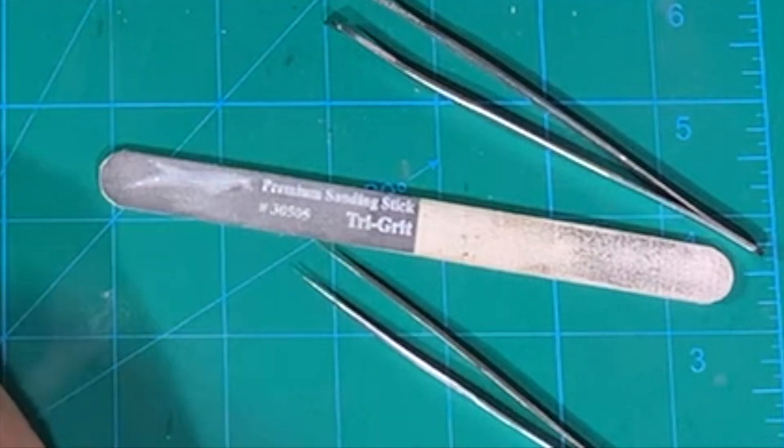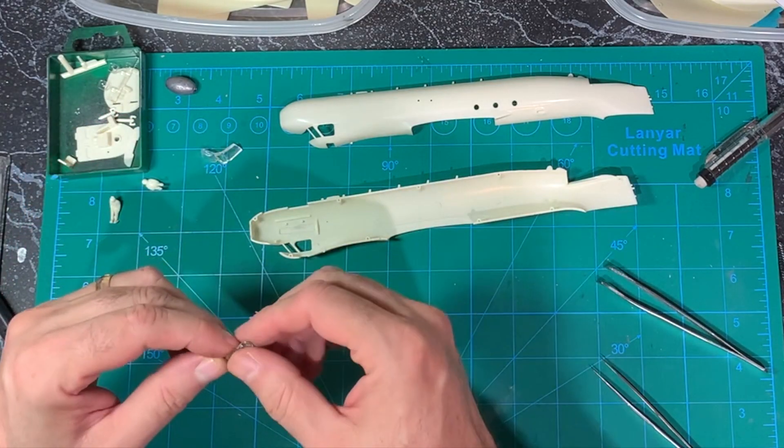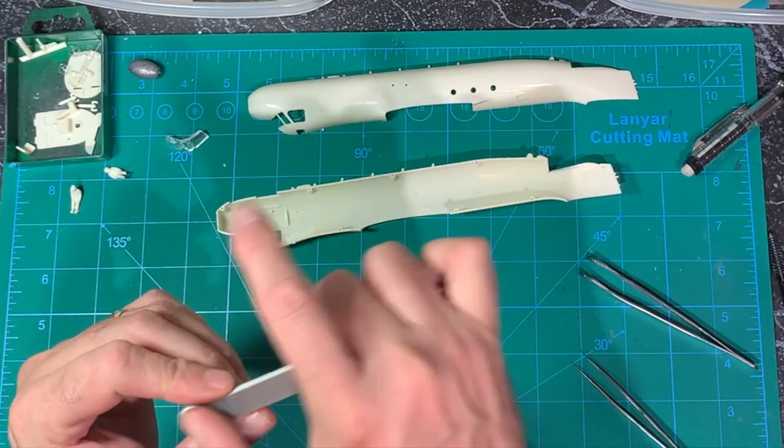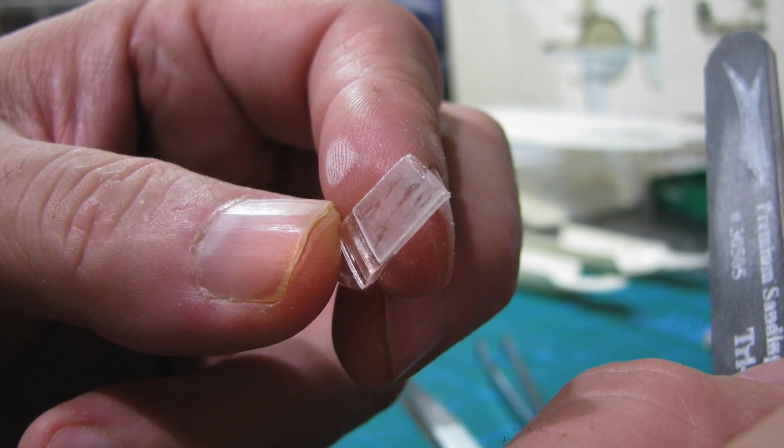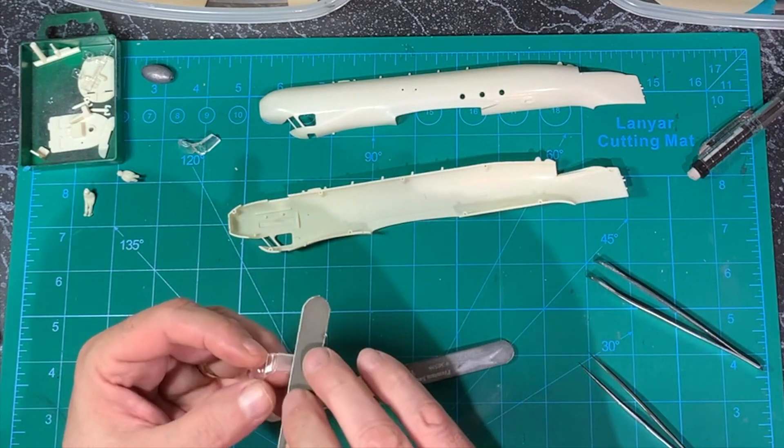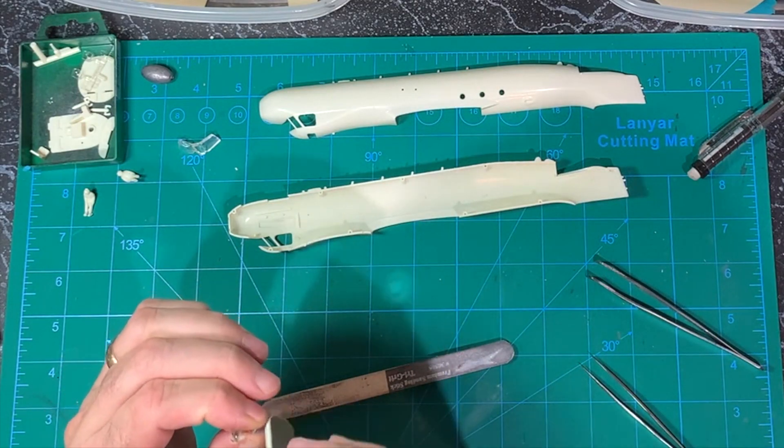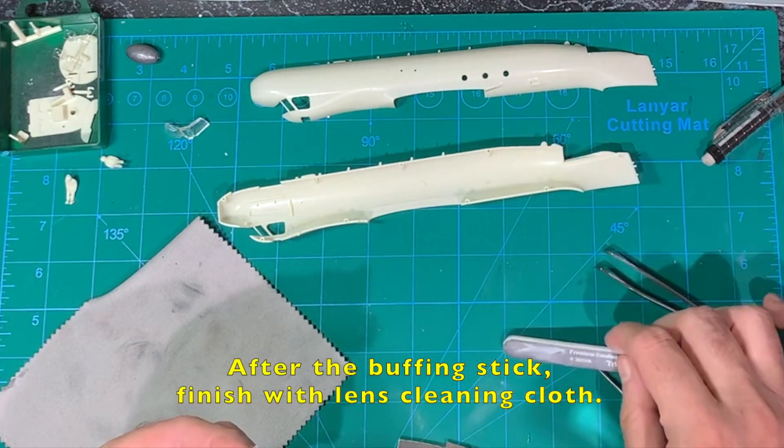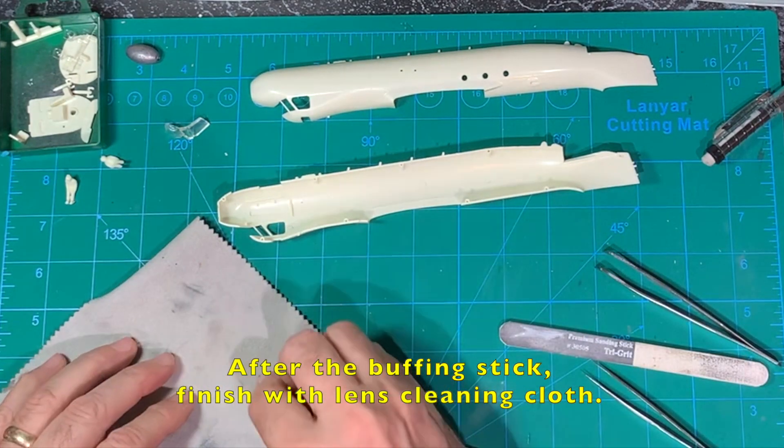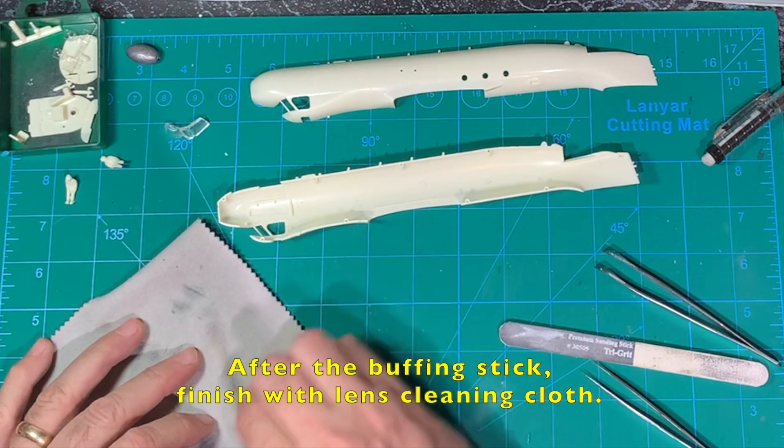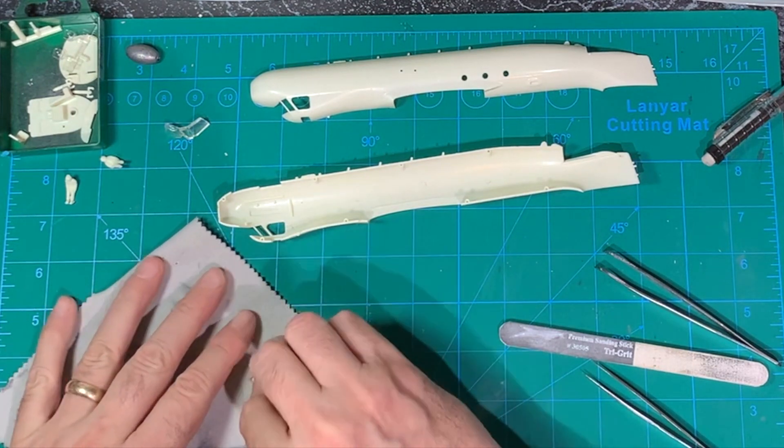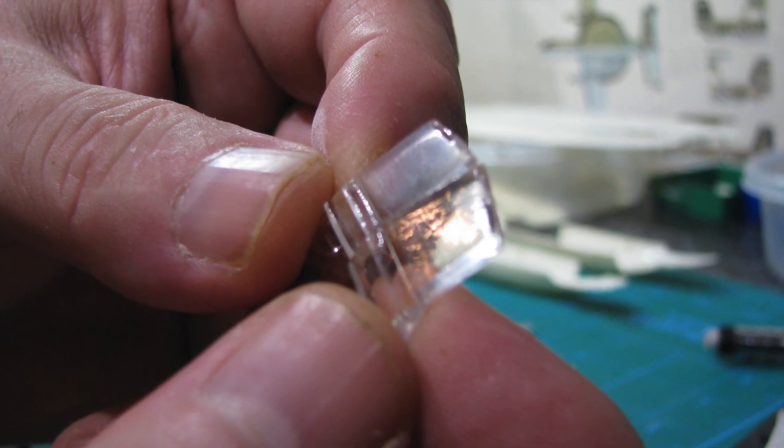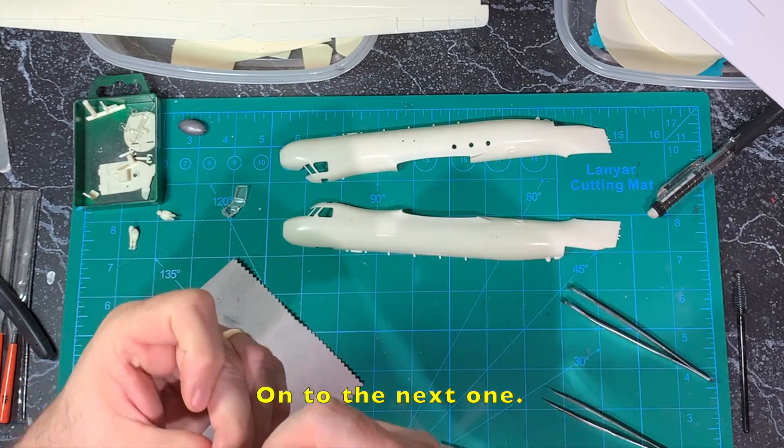I'm using the Squadron Tri-Grit Sanding Stick to work down those waves. This is precisely the situation and application this stick is intended for, and it actually does a nice job as you'll see. Basically, you just work down from the most coarse black section through the white, less coarse section, and then finish with the gray side, which has a smooth leather-like surface that actually buffs the piece. And then I finish with rubbing the piece against a very soft glasses lens cleaning cloth, and then later I'll dip the pieces in future floor wax.